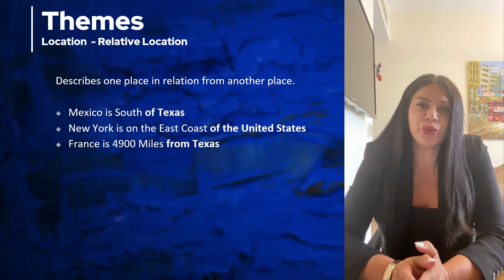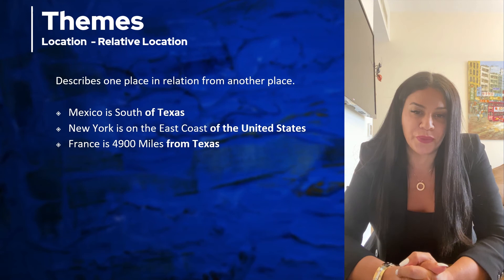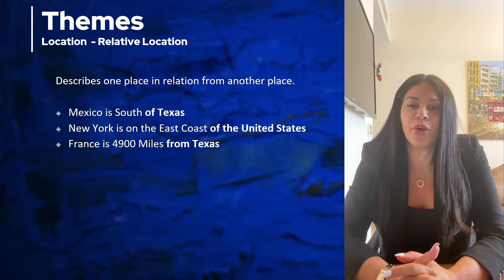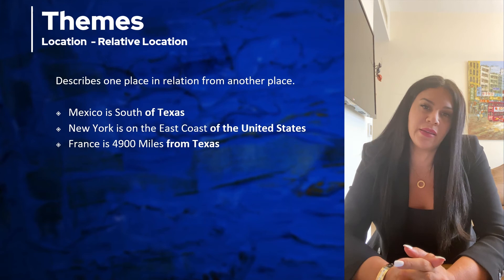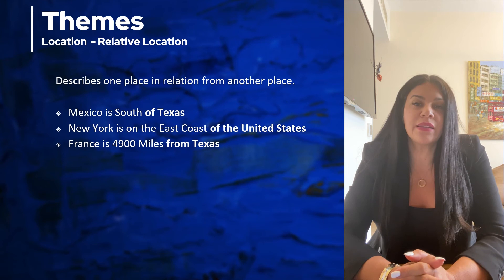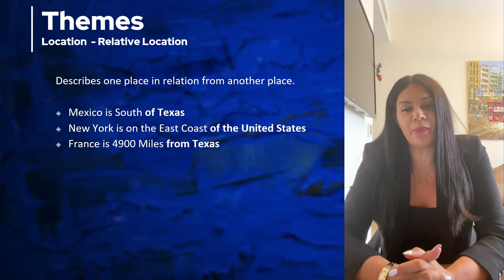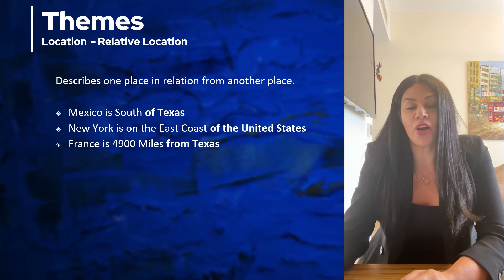It's easier to use relative location when we describe a location. In geography, when using relative location, we always use directions such as north, south, east, and west. Usually, north is at the top of the map, south is at the bottom of the map, and west is to the left of the map. Most maps have compass roses to verify which way the map is oriented.